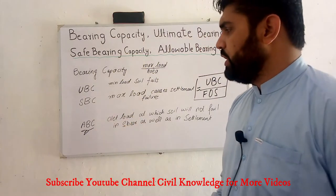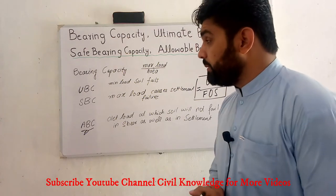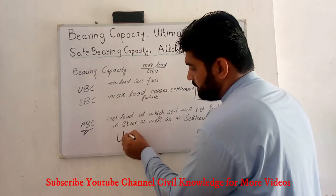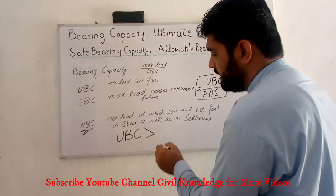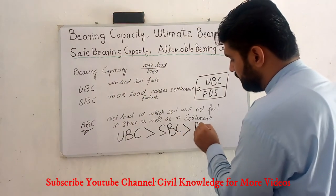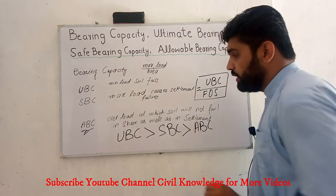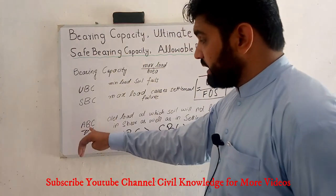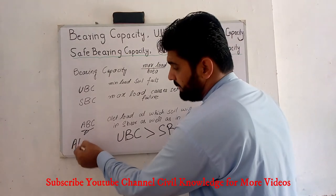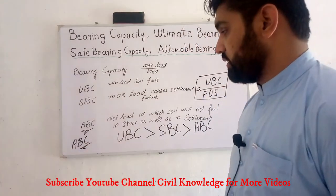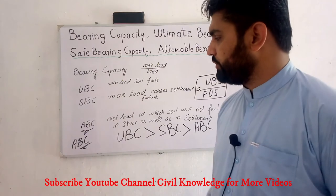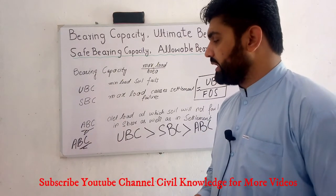We can say that for any soil, the ultimate bearing capacity will be more than safe bearing capacity, and the safe bearing capacity will be more than allowable bearing capacity. You should note that when we are designing a foundation, we take the allowable bearing capacity because it is the least among the three. So for factor of safety in design, we use allowable bearing capacity.